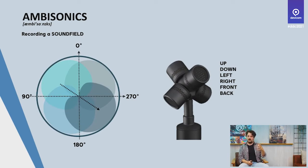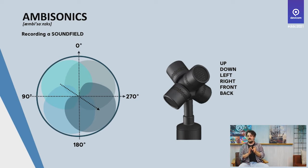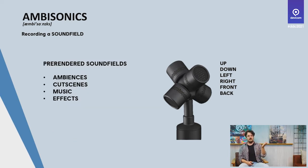We can also post-process using ambisonics. Ambisonics is a concept of either recording something or recreating it — specifically recording a sound field. An ambisonic first-order microphone allows you to record up, down, left, right, front, and back — basically any possible direction. Later, when processing these recordings, we can give a direction based on where the listener is looking. This allows us to create ambiences, cut scenes, music, and effects — everything you produce before putting it in game.